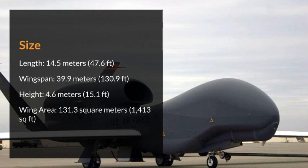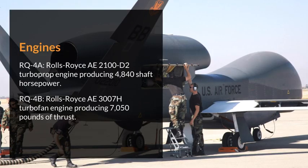Wing area: 131.3 square meters (1,413 square feet). Engines: The RQ-4A uses a Rolls-Royce AE-2100D2 turboprop engine producing 4,840 shaft horsepower. The RQ-4B uses a Rolls-Royce AE-3007H turbofan engine producing 7,050 pounds of thrust.